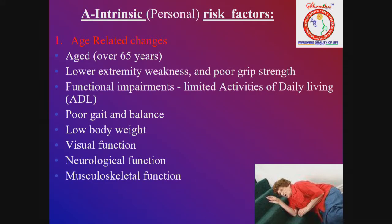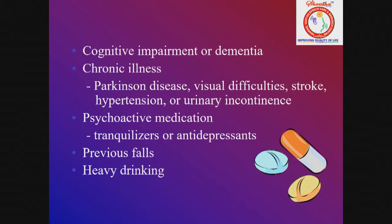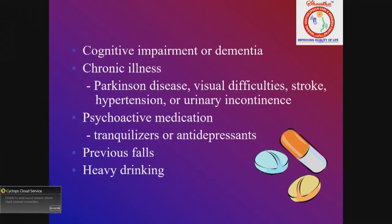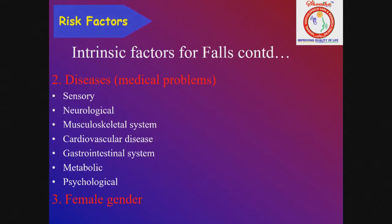Neurological functions include cognitive impairment or dementia, chronic illness such as Parkinson's disease, visual difficulties, stroke, hypertension, urinary incontinence, psychiatric conditions, psychoactive medications, tranquilizers or anti-depression medications, and previous history of fall — which is very important. Previous history gives you an idea of how frequently the person falls. Disease-based intrinsic causes are classified as: sensory, neurological, musculoskeletal, cardiovascular, gastrointestinal, metabolic, and psychological. Female gender is more affected.